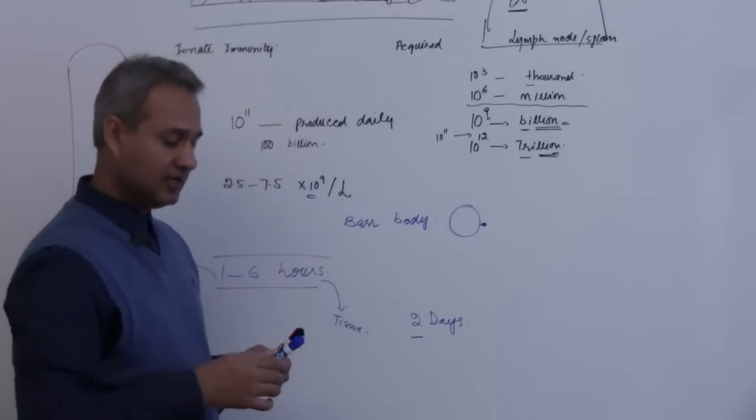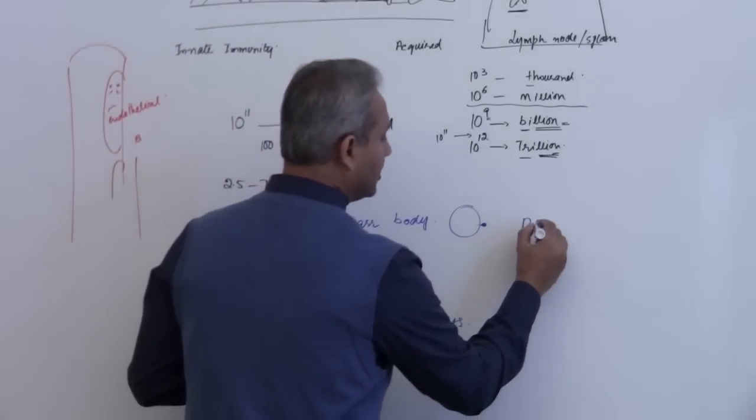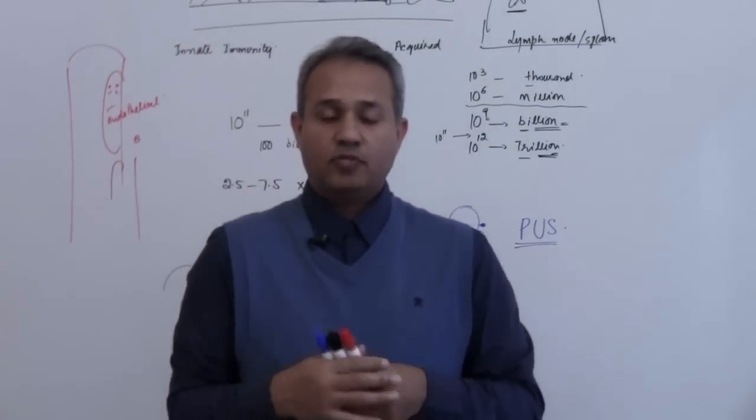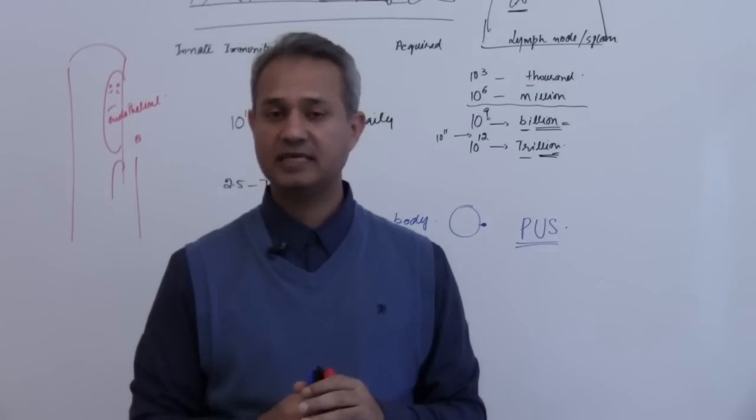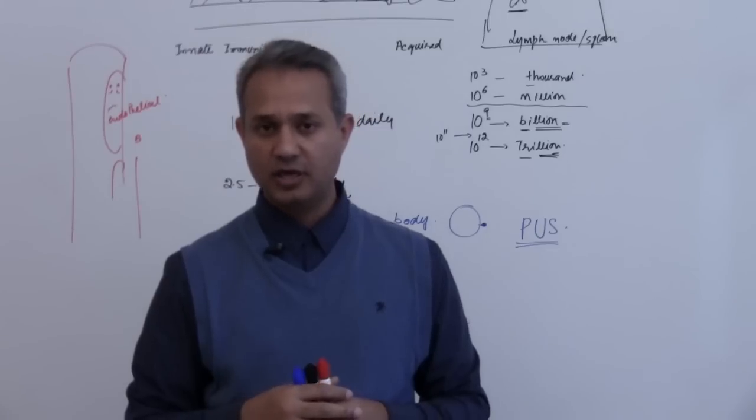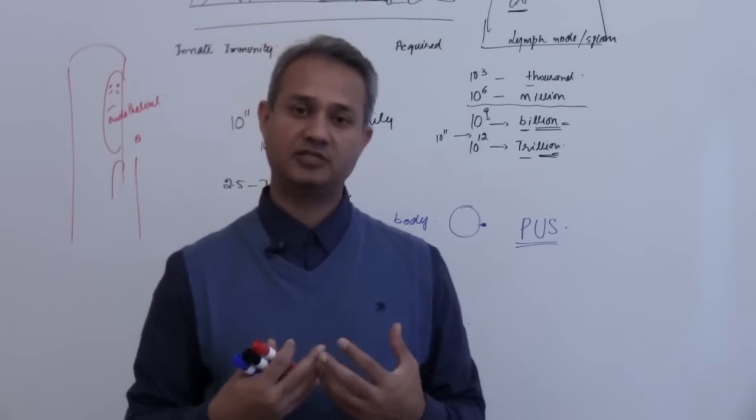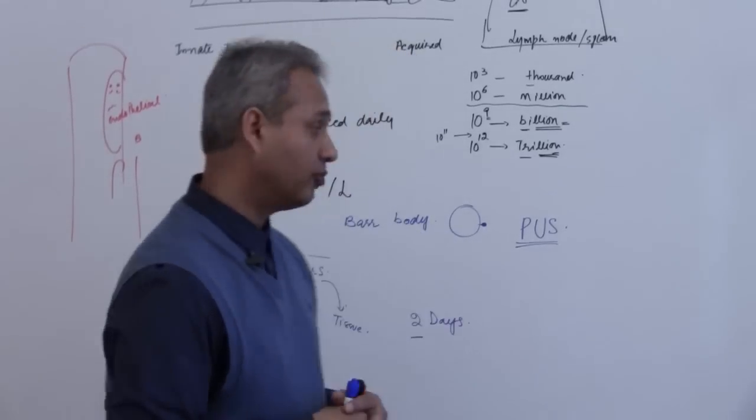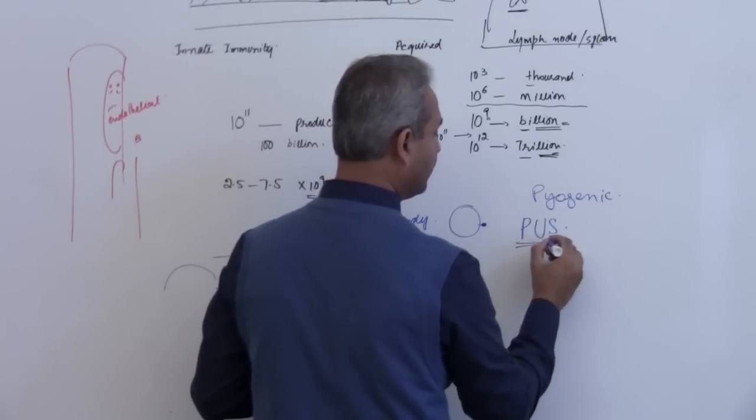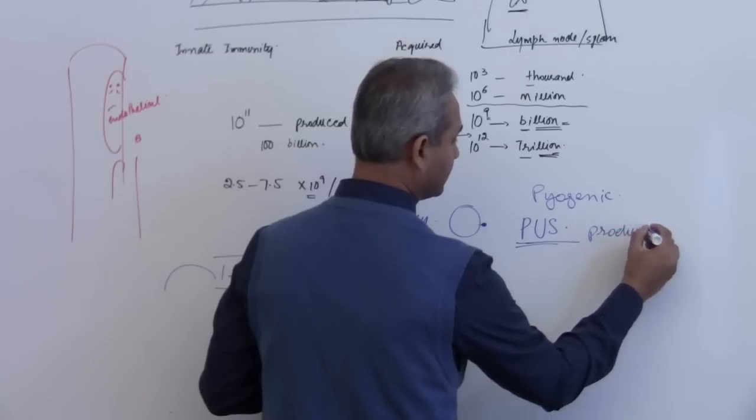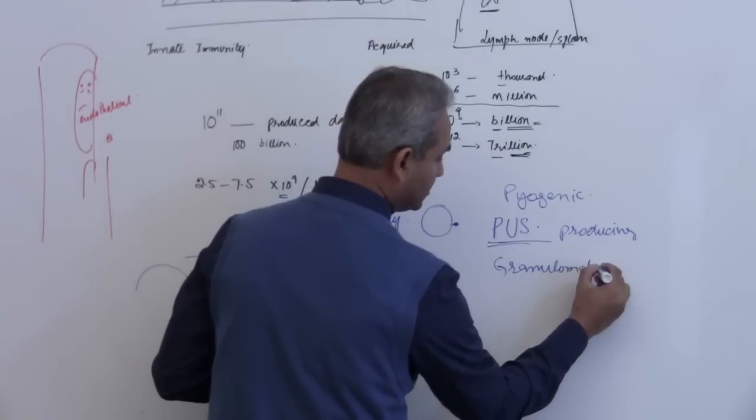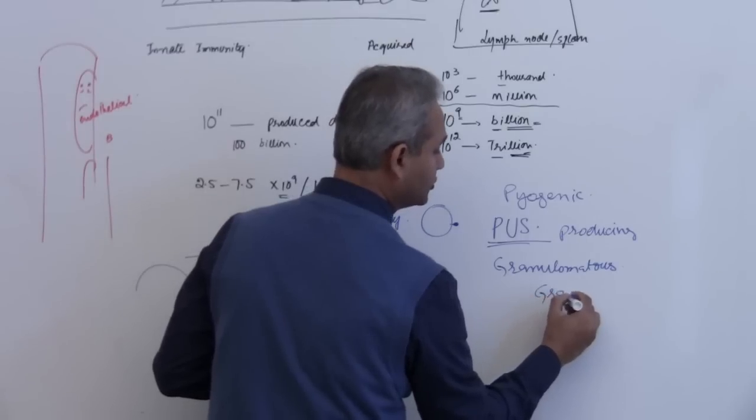Another thing in terms of fight is the pus. So I hope you know, I would very quickly say this. Body's defenses can be separated, innate defense can be separated into two types: biogenic defense and granulomatous defense. Biogenic or pus-producing defense and granulomatous or granuloma-producing defense.